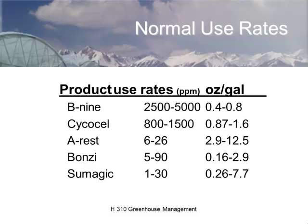B9 is applied at 2,500 to 5,000 ppm, Cycocel at 800 to 1,500 ppm. Products like A-Rest, Bonzi, and Sumagic are triazole inhibitors applied at much lower rates. Triazole inhibitors actually come from the pharmaceutical industry — many triazole drugs are used for treatment of things like nail fungus.